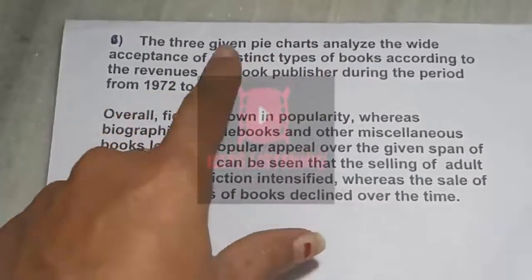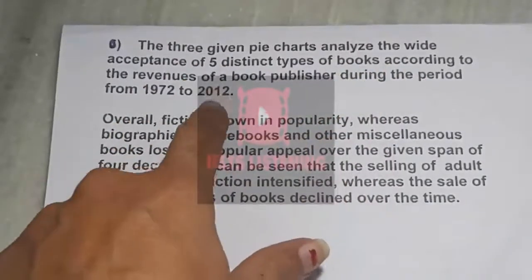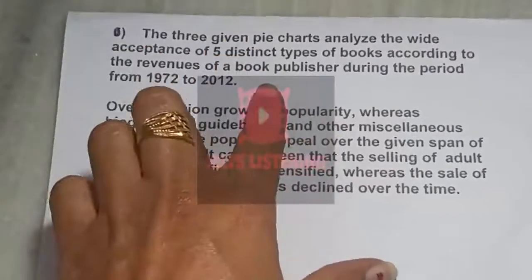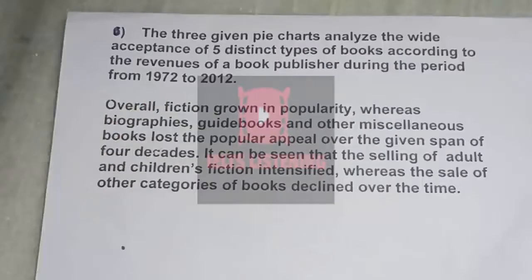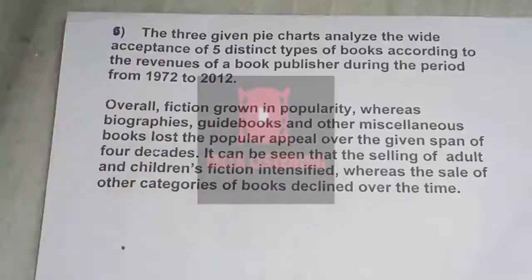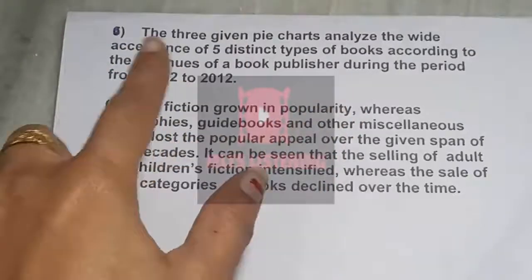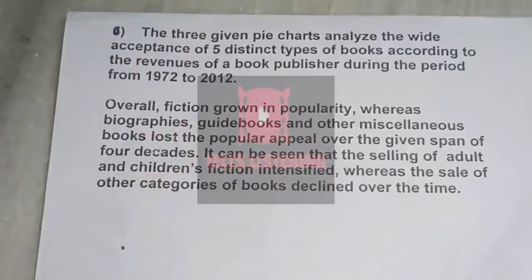Now let's see how we will answer this. The given pie charts analyze the wide acceptance of five distinct types of books according to the revenue of a book publisher — we are using 'book publisher' instead of 'bookseller' — during the period 1972 to 2012, describing the selling of five distinct types of books.